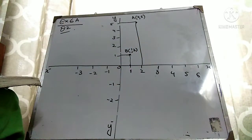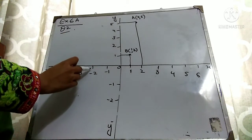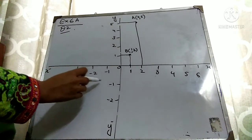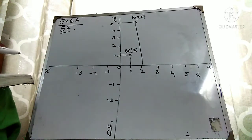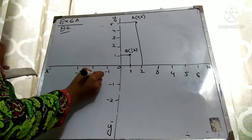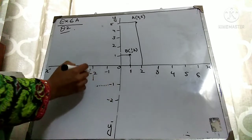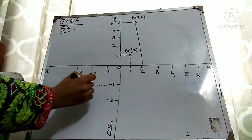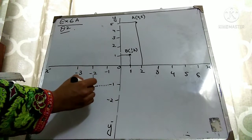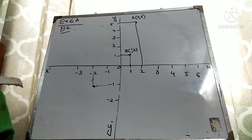Now let's come to point C at (-2, -1). X value is minus 2 — here minus 2. Drag it to minus 1 on Y. This is X minus 2 and Y minus 1. So the point is here. This is your point C at (-2, -1).